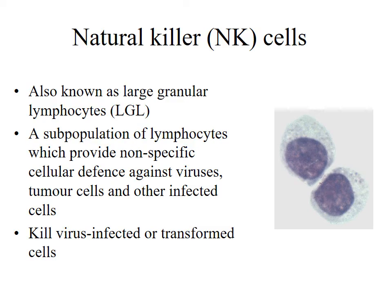Another important cellular component of innate immunity is natural killer cells, also known as large granular lymphocytes. There is a key difference between lymphocytes and natural killer cells: natural killer cells are non-specific and act against virus-infected cells, tumor cells, or cancerous cells, while lymphocytes are very specific and are activated by antigens. Natural killer cells, or NK cells, are activated by lymphocytes — more specifically, helper T cells.